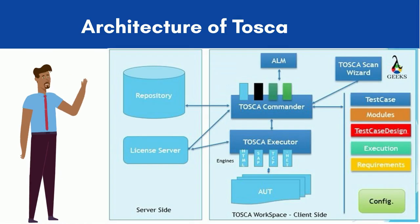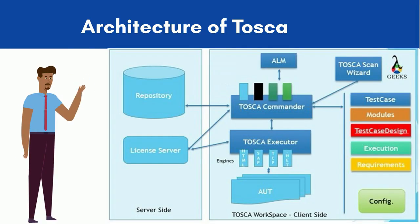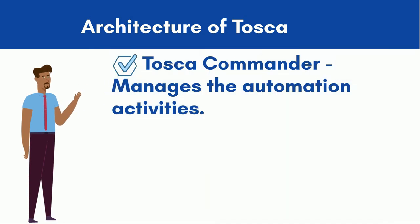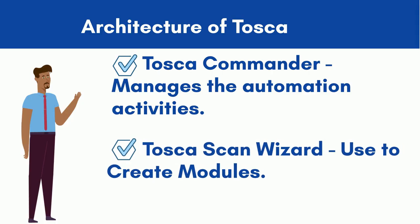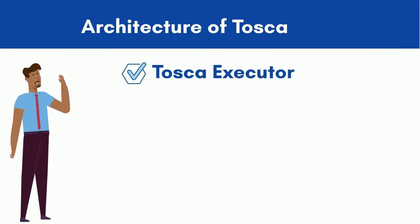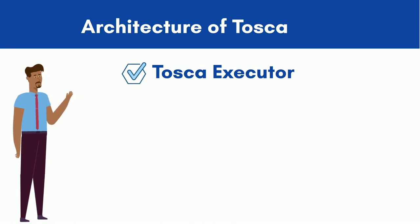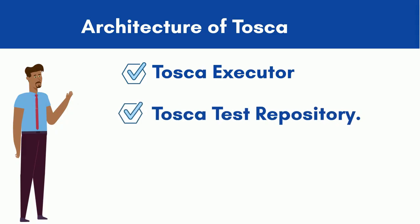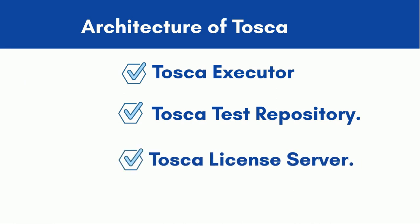Let's understand the high-level architecture of Tosca. The tool is developed with five different components. Tosca Commander is used to manage test automation activities such as development, execution, maintenance, and reporting. The Tosca Scan Wizard component allows testers to scan the test application and create modules — scanning captures the technical information of the application under test. Tosca Executor manages the test executions and test logs. The test repository is used to store test cases, modules, dynamic test data, and user information in a shared repository, using databases like Oracle, SQL Server, and DB2. The license server manages the configuration, connection, and validation of licenses for users to access Tosca.